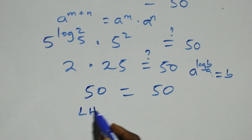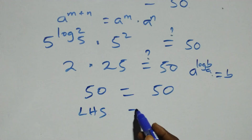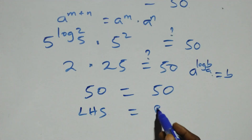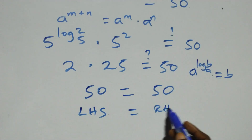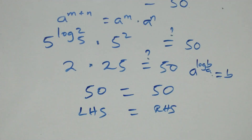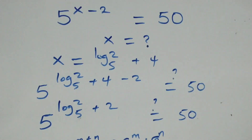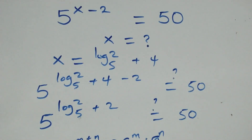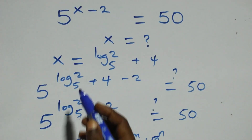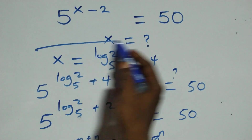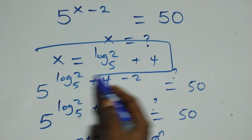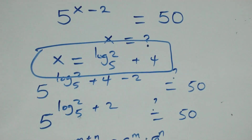The left-hand side equals the right-hand side. Therefore we conclude that x equals to log base 5 of 2 plus 4 satisfies the given problem.